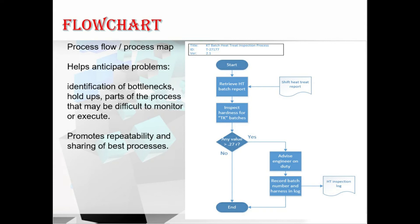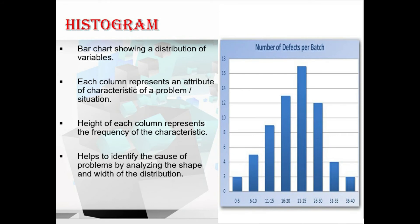Histograms show a graphical representation of numerical data. They can show the number of defects per deliverable, a ranking of the causes of defects, the number of times each process is non-compliant, or other representations of project or product defects. Referring to the slide, it represents a bar chart showing a distribution of variables — each column represents an attribute or characteristic of a problem, and the height of each column represents the frequency of that characteristic, helping to identify the cause of a problem by analyzing the shape and width of the distribution.